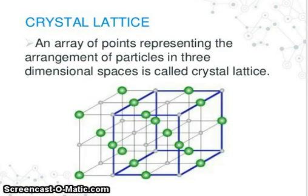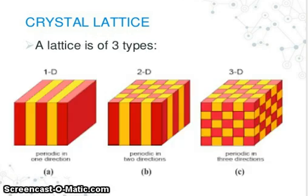Now, crystal lattice — what is this? A crystal lattice is an array of points representing the arrangement of particles in three-dimensional space. A lattice is of three types: you can see here 1D, 2D, and 3D — one direction, two direction, and three direction.